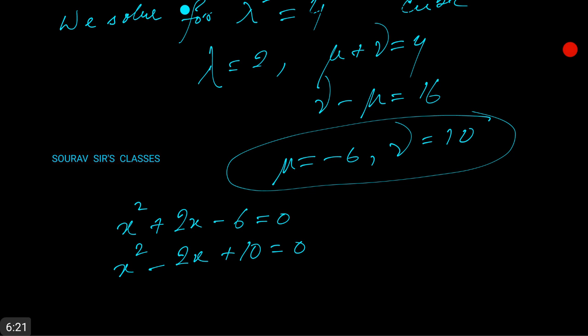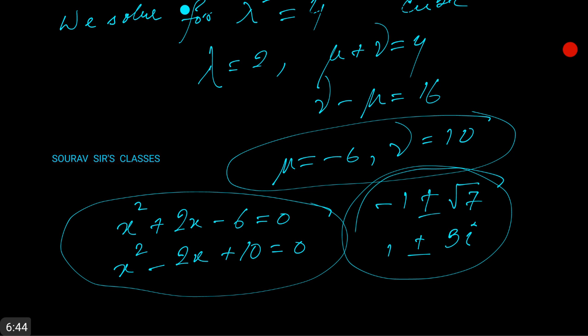These are the two equations which you will solve, and the answers are of the form negative 1 plus minus root 7 and 1 plus minus 3i. These should be your answer if everything goes correctly. That's it, thank you for watching.